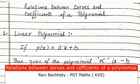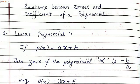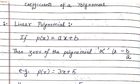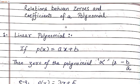In this video we'll learn relations between zeros and coefficients of a polynomial. This is a prerequisite lesson for exercise 2.2. In the previous video we learned some polynomials, their graphs, and what is meant by zeros of the polynomial. Now in this video we'll see the relation between zeros of the polynomial and the coefficients of a polynomial.